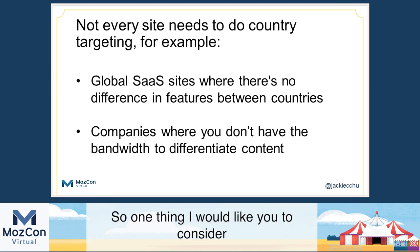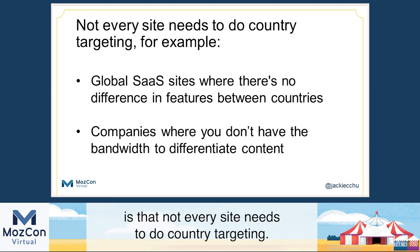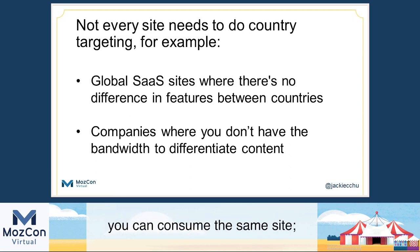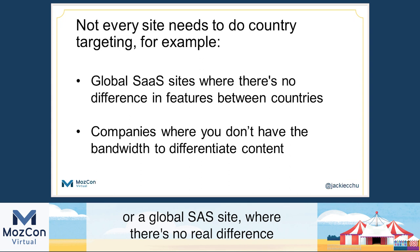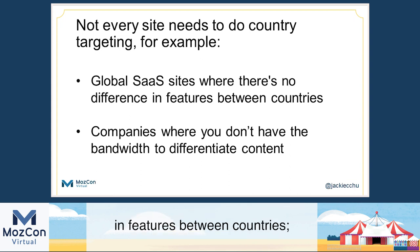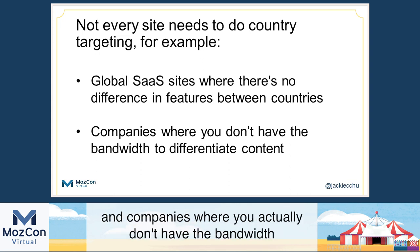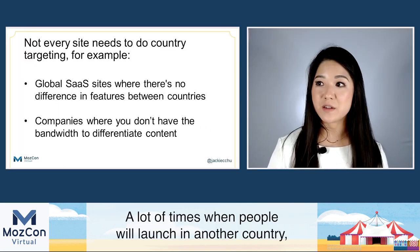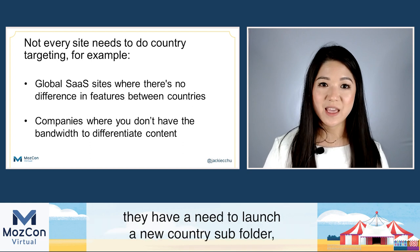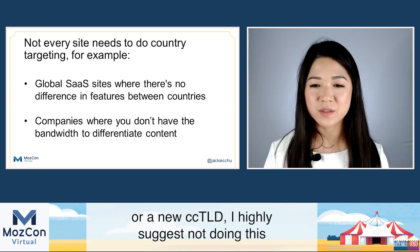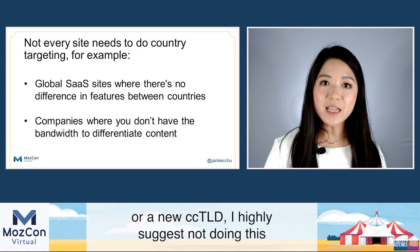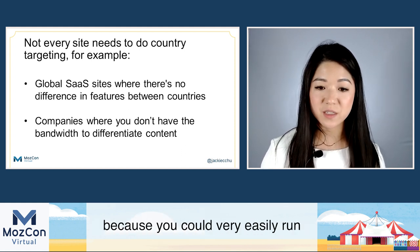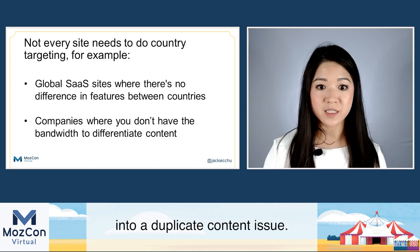Not every site needs to do country targeting. For example, publishers where as long as you speak English you can consume the same site, or a global SaaS site with no real difference in features between countries. A lot of times when people launch in another country, even if they speak the same language, they feel the need to launch a new country subfolder or CCTLD. I highly suggest not doing this if you don't actually have the bandwidth to differentiate content, because you could very easily run into a duplicate content issue.